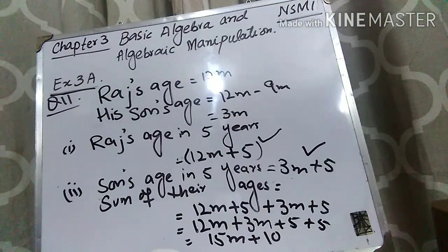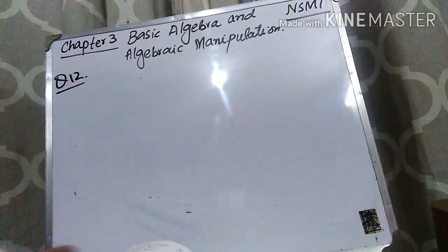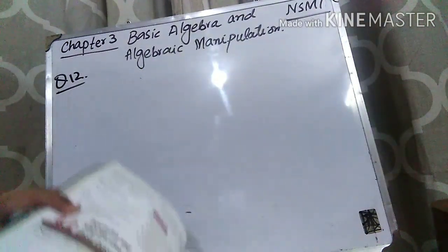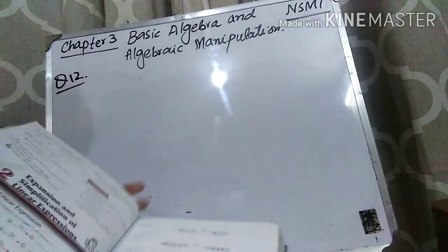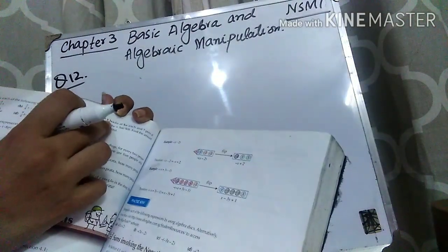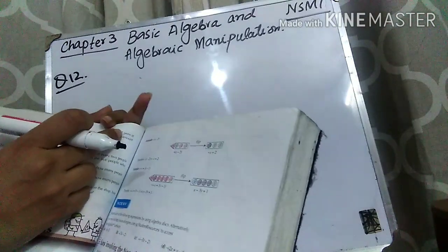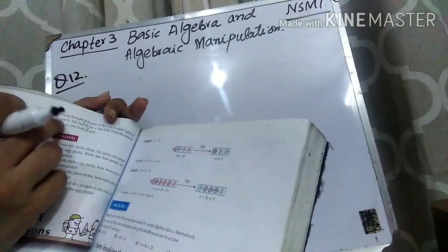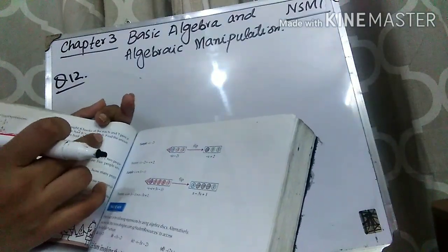I hope that sum is clear to you. Now let's come to question number 12. The question is: Huxian bought 8 books at $W each and 7 pens at $M each.